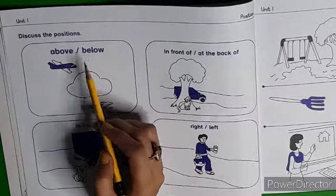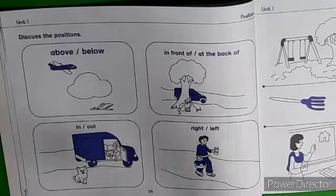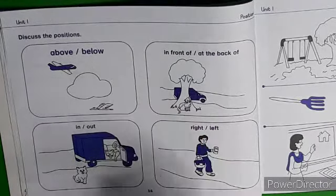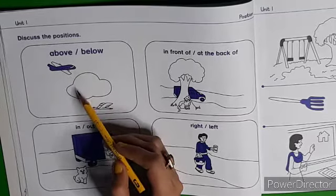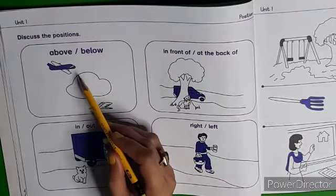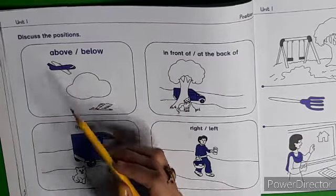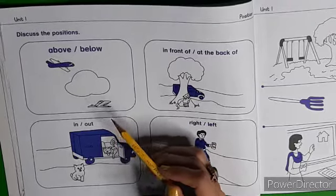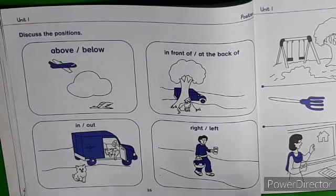Above, Below. Above का मतलब होता है किसी चीज से ऊपर. Below का मतलब होता है किसी चीज से नीचे. Where is the aeroplane? The aeroplane is above the cloud — वो बादलों से ऊँचा उड़ता है. Where is the bird? The bird is below the cloud — परिंदे जो हैं वो बादलों से नीचे उड़ते हैं.